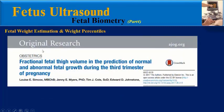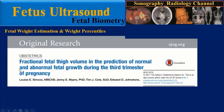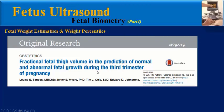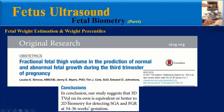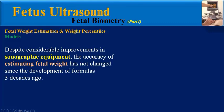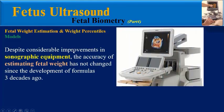Recent research, such as this paper published in 2017 about fractional fetal thigh volume in the prediction of normal and abnormal fetal growth during the third trimester, concludes that 3D thigh volume on its own is equivalent to or better than 2D biometry for detecting small for gestational age and fetal growth restriction at 34 to 36 weeks gestation. However, this is not yet generally accepted despite considerable improvements in sonographic equipment.